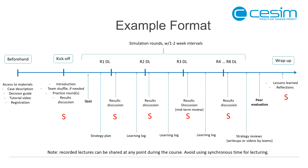Now let's get started with the format. In this picture we have quite a few different elements. The assumption is that we run the simulation course as a combination of synchronous and asynchronous learning. What I've indicated here with a red S indicates a synchronous session, and the rest is asynchronous. The simulation rounds have usually been played with one or two week intervals. This could be shorter — if you need to run the simulation over three days or even in one day, it is possible. But this is the most typical format we see. The total number of rounds students play is between four and ten, quite typically — but that's up to you to decide.